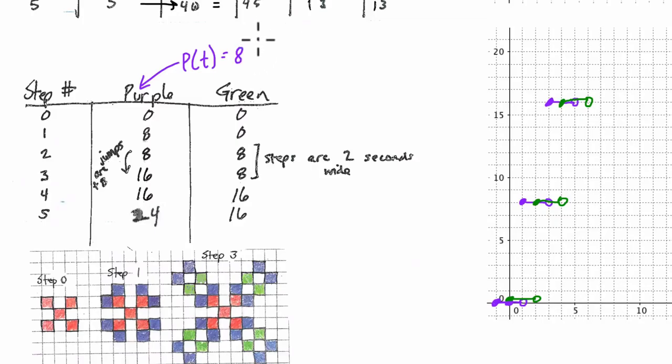And that's where the ceiling function comes in. It has this cool bracket like this. That means round up. We take our time, and it depends on the function, of course. But a lot of the step functions I'm coming across, we use division. And we divide by the number that equals the length of your step. My steps here, in all these cases, are two seconds.